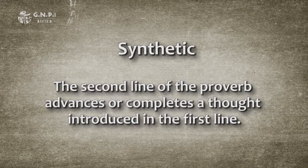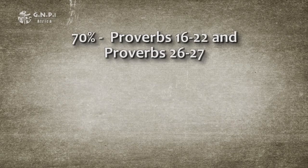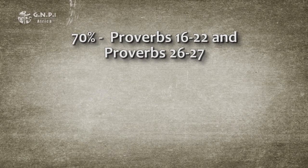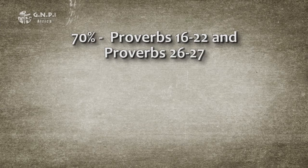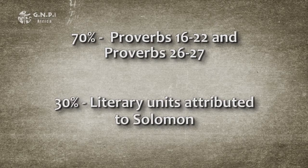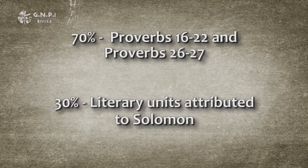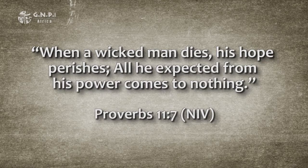The third kind of proverb is called synthetic. This means the second line of the proverb advances or completes a thought introduced in the first line. Seventy percent of all synthetic proverbs are found in chapters 16 to 22 and chapters 26 and 27. The remaining 30 percent are found almost exclusively in the literary units attributed to Solomon. An example of a synthetic proverb is chapter 11 verse 7: 'When a wicked man dies, his hope perishes, and all he expected from his power comes to nothing.' The second line does not parallel or contrast the first — it expands or completes the thought. The proverb highlights the futility of the wicked's plans and dreams, for they are without the help and protection of the Lord.